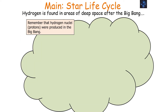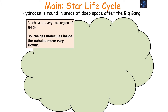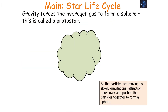Hydrogen is found in areas of deep space after the Big Bang — hydrogen nuclei were produced in the Big Bang. A collection of hydrogen gas in the universe is called a nebula. The original name for nebulae was planetary nebulae, as we thought this was where planets were formed. This was ultimately wrong, but the name stuck, so there are no planets found in a planetary nebula. A nebula is a very cold region of space, so the gas molecules inside move very slowly, and the denser clumps of the cloud contract slowly under gravity.